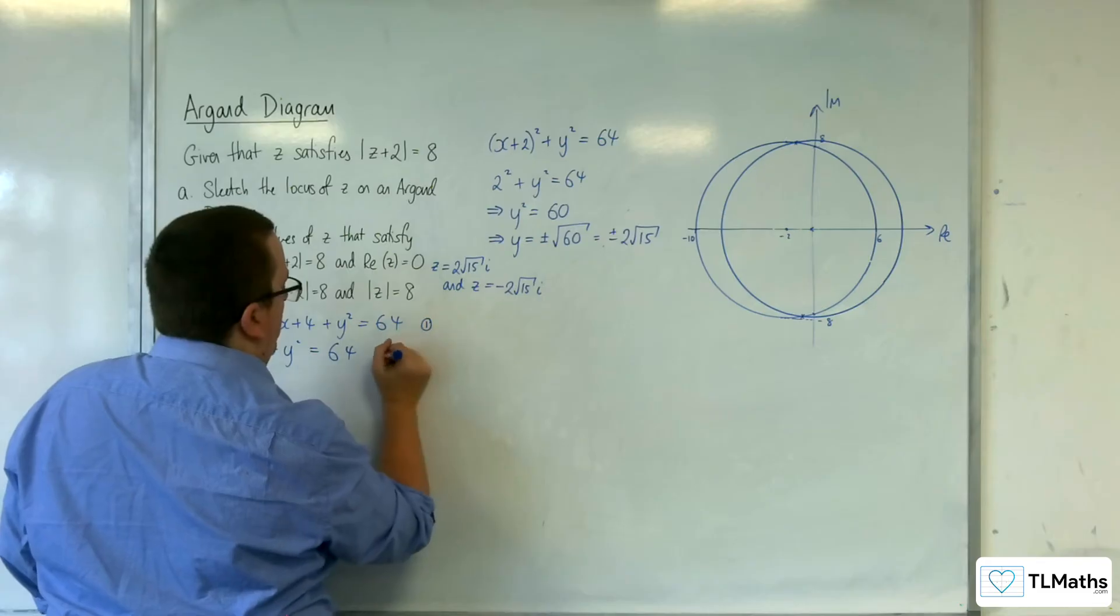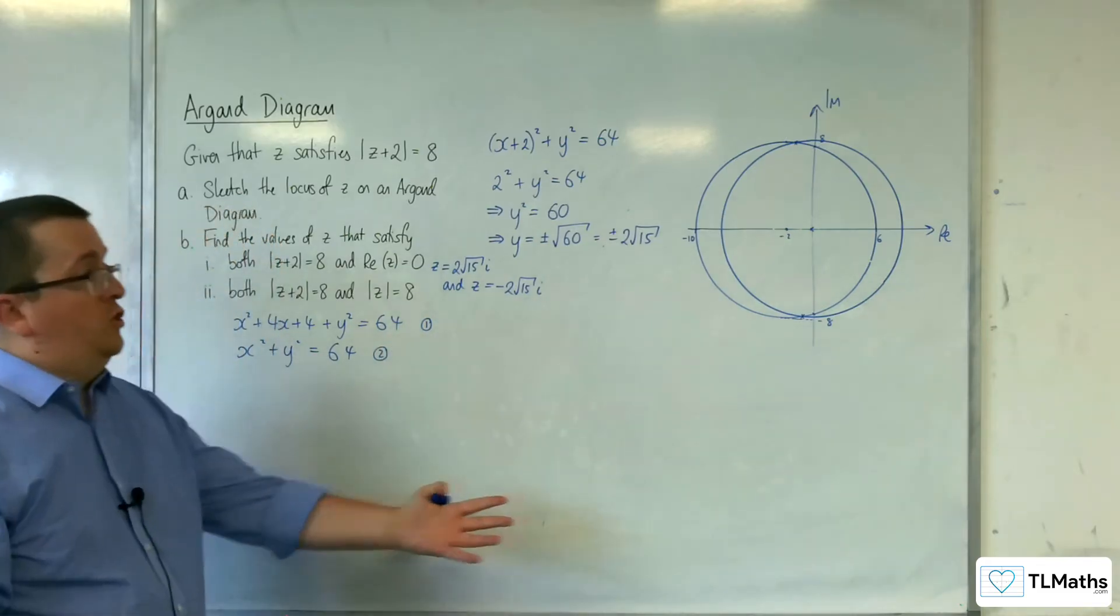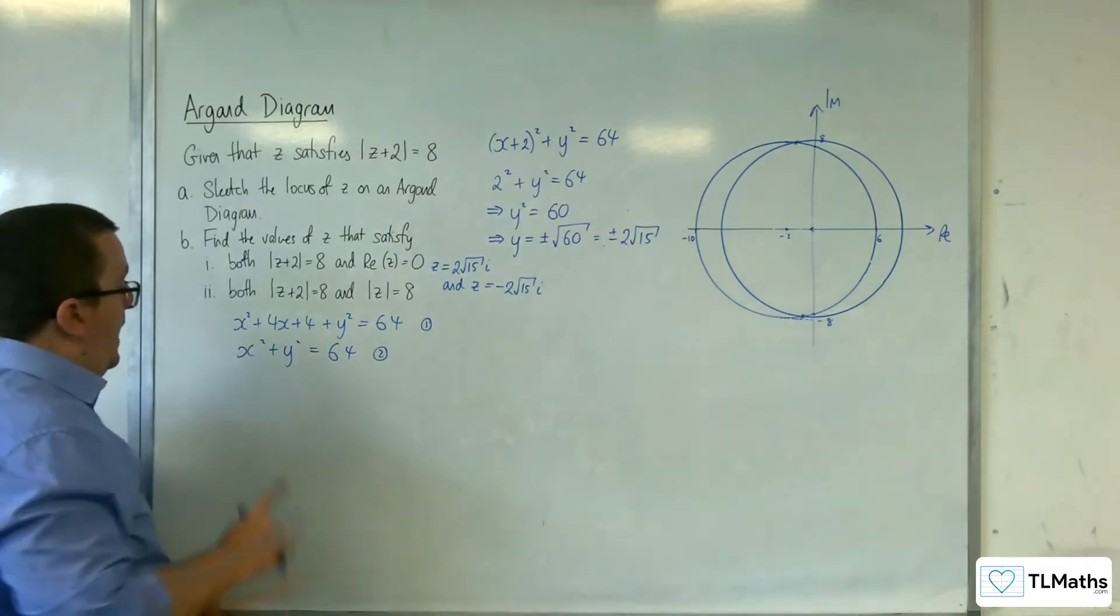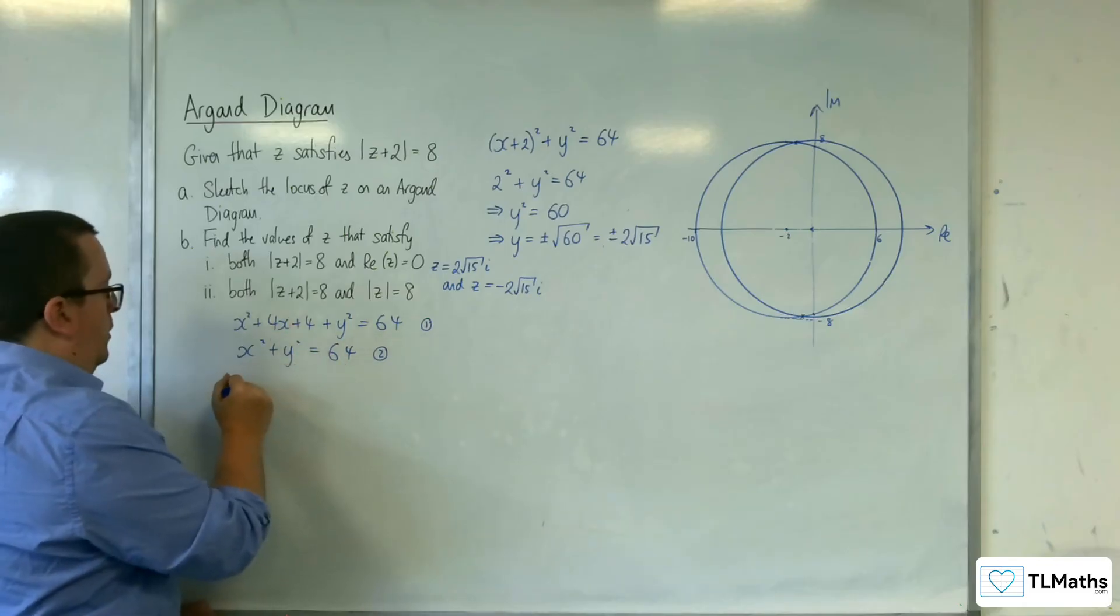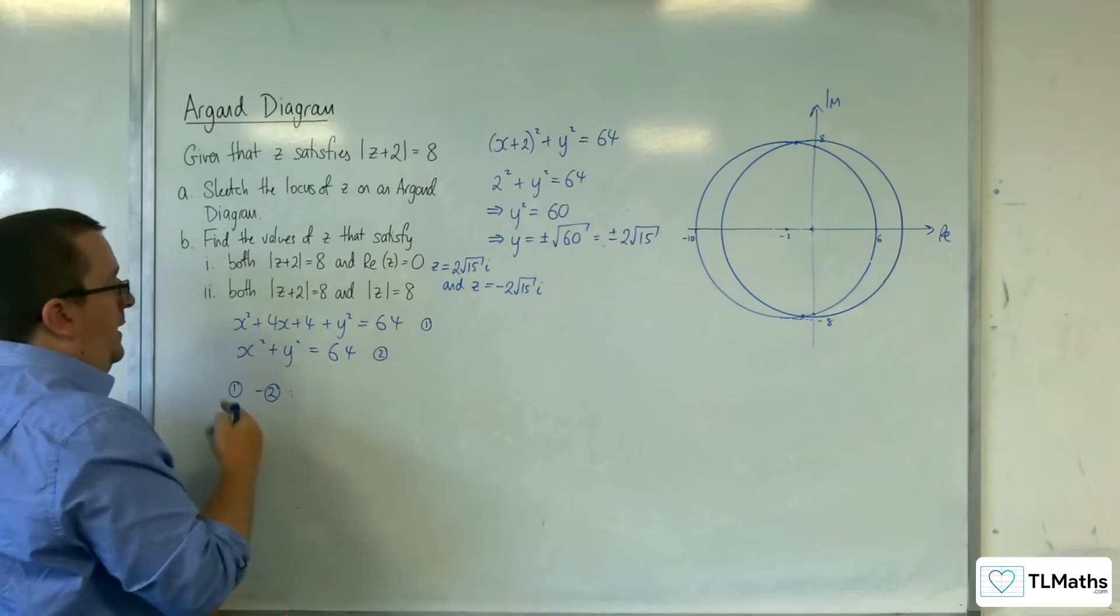So, if this is your equation number 1 and that's your equation number 2, and you want to solve these simultaneously because you want to work out where the two circles intersect. Then, we can do equation 1, take away equation 2. x squared, take away x squared. Gone.